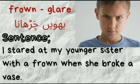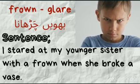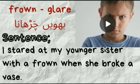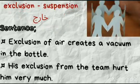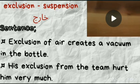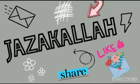Our next word is 'frown,' which means glare. The sentence is: I stared at my younger sister with a frown when she broke a vase. Our next word is 'exclusion,' which means suspension. Number one: exclusion of air creates a vacuum in the bottle. Number two: his exclusion from the team hurt him very much. Okay students, that's all for today.